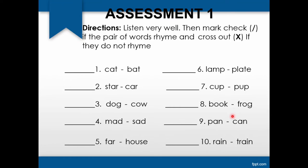And for your last activity, listen very well and mark check if the pair of words rhyme and cross out if they do not rhyme. Number one: cat, bat. Star, car. Dog, cow. Mad, set.